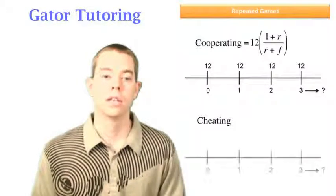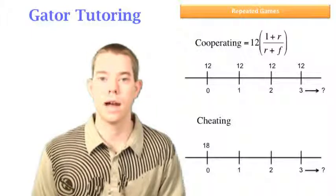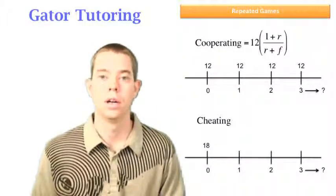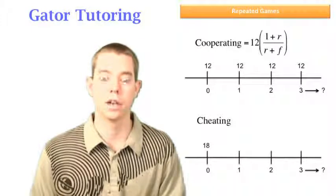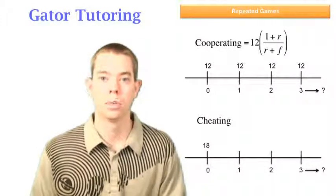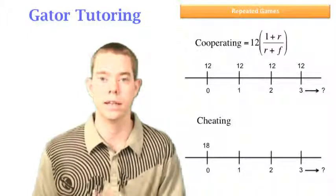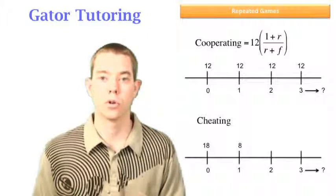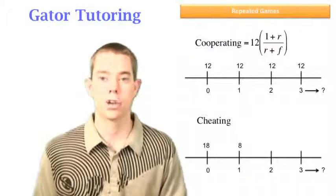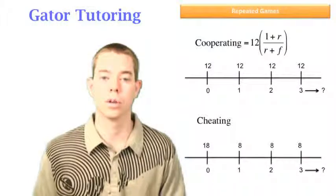So cheating, cheating looks like this. In year 0, we cheat. We get 18 right now. And then in year 1, you'll never trust us again. The other guy will never trust us again. So he'll always play hard. Well, then it's in our best interest to play hard as well, because we're not going to play soft and get 4 while he gets 18. We're going to play hard and get 8 from then on out. So Grim Trigger strategy says he'll never trust us again and always play hard. Therefore, we're going to want to end up at the Nash equilibrium payment of 8.